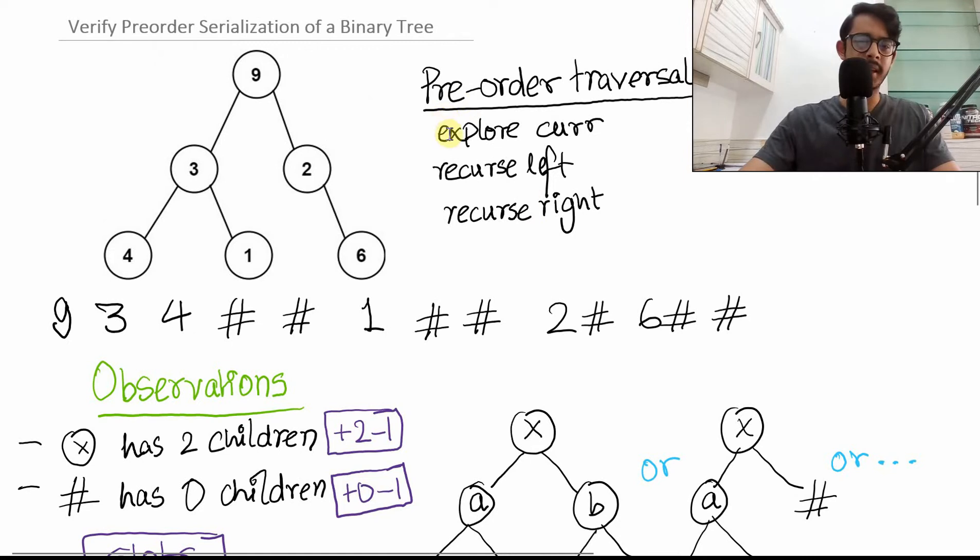It also looks like we can exploit this property of preorder traversal because it says that you first explore the current one. So maybe you can have some sort of a count here. I explored a valid node. For each valid node, I have two more spaces now for each of my children, whether they be an invalid node or valid, I don't care, but I have two more spaces.